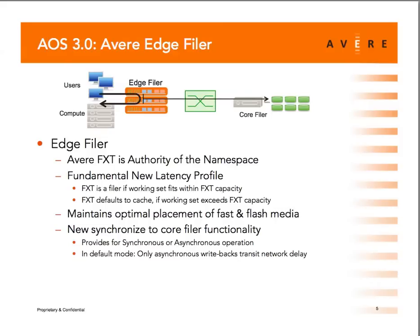The 3.0 release still maintains optimal placement of flash and faster media near the users and compute nodes, keeping latency down. We've added synchronization functionality where we synchronize blocks to the core filer to ensure your central data repository has a copy of all data. This synchronization can happen asynchronously — where most users will be, so core filer latency is invisible to end users — or synchronously for paranoid applications, committing writes to both edge and core before acknowledging to users.